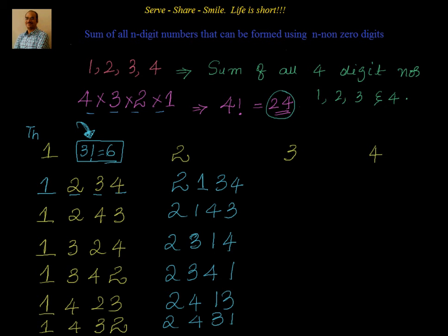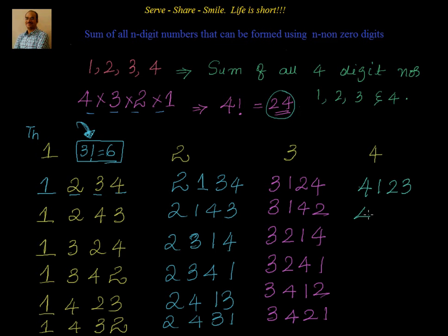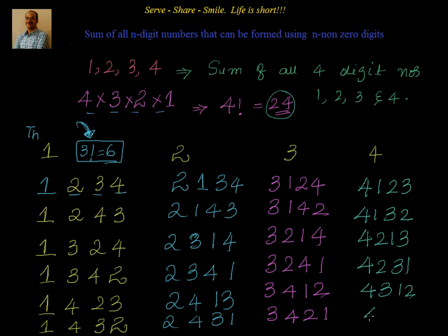Let us go to the next group starting with 3. The numbers are 3124, 3142, 3214, 3241, 3412, and 3421. And for the last group starting with 4: 4123, 4132, 4213, 4231, 4312, and 4321. So these are all the total 24 numbers which can be formed with 1, 2, 3, 4.